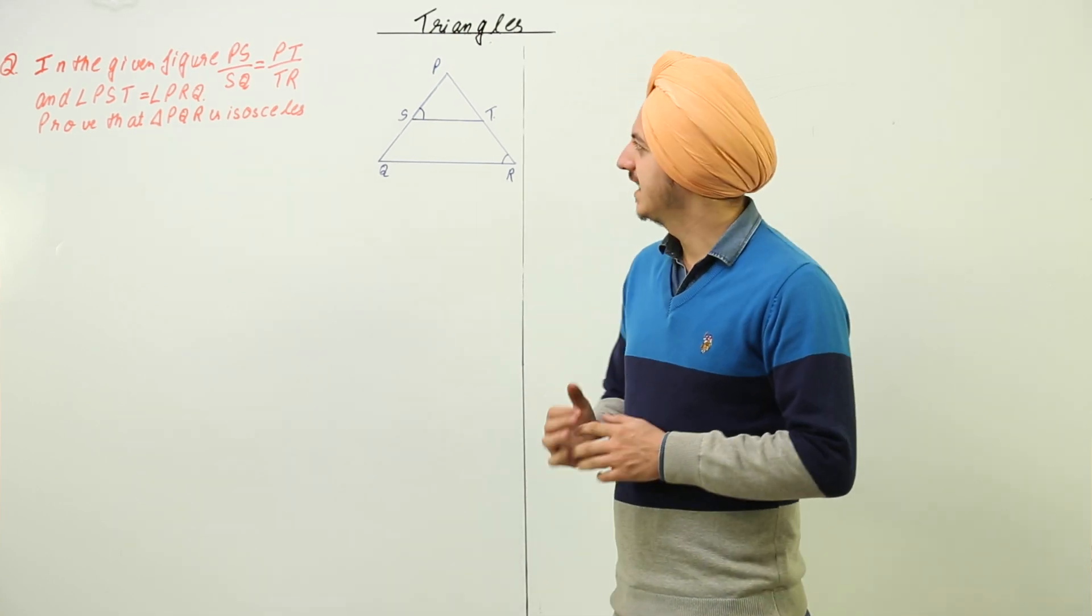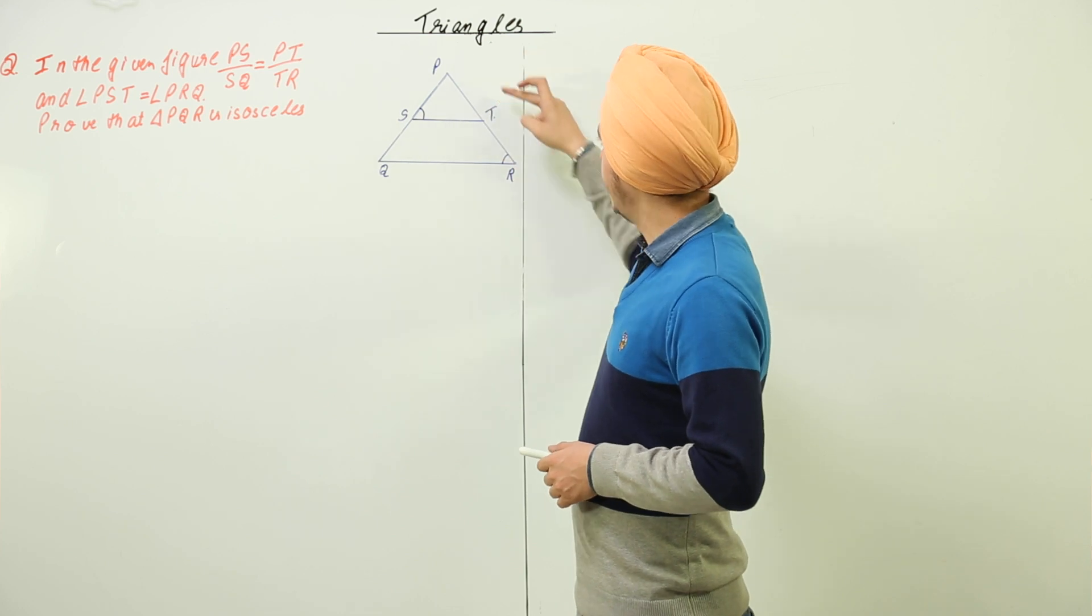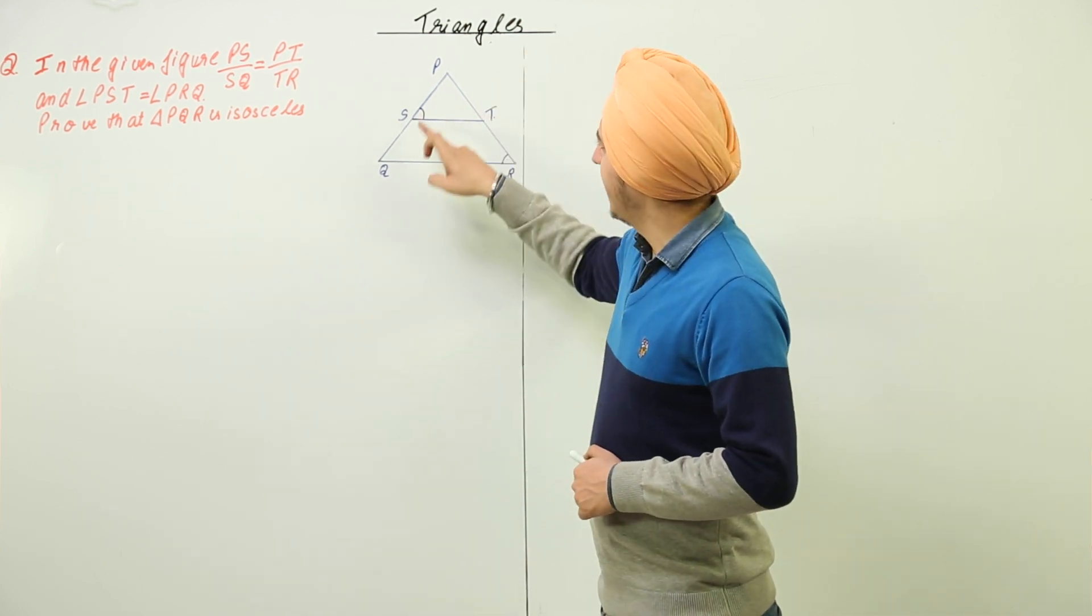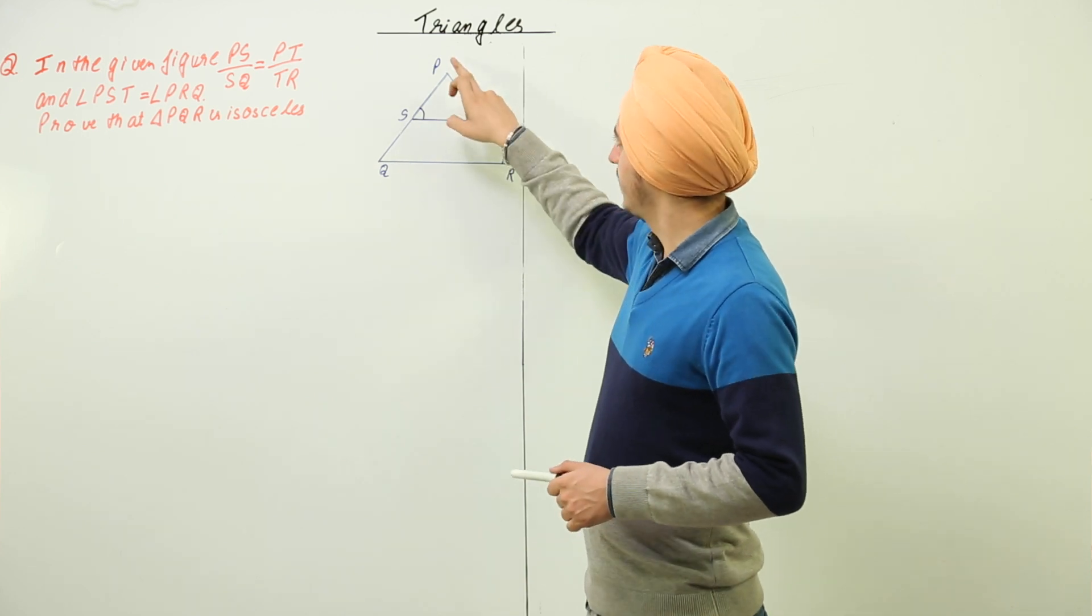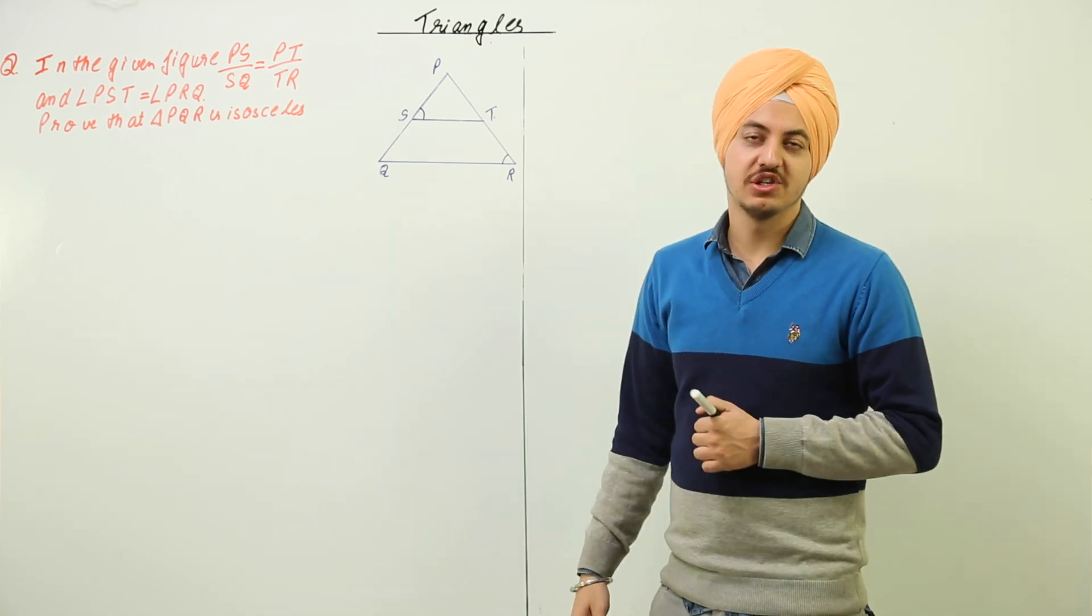Now the next question over here says if PS upon SQ is equal to PT upon TR and angle PST is equal to angle PRQ, then prove that triangle PQR is an isosceles triangle.